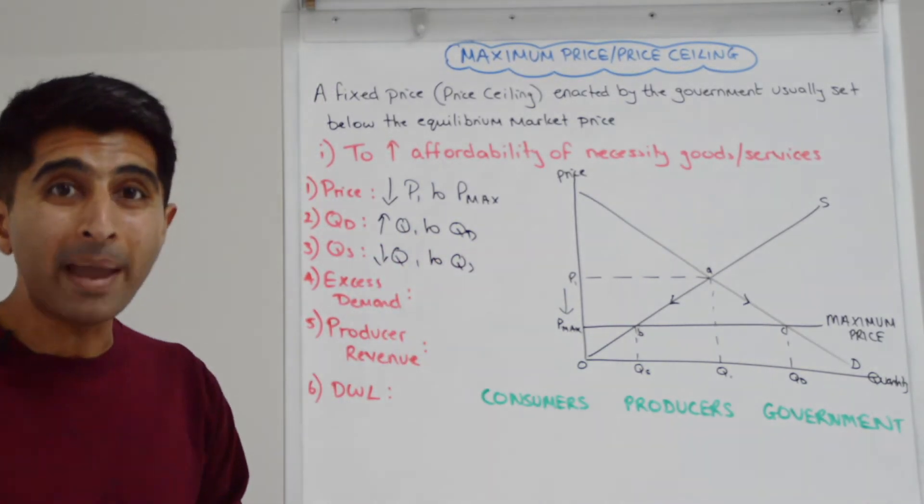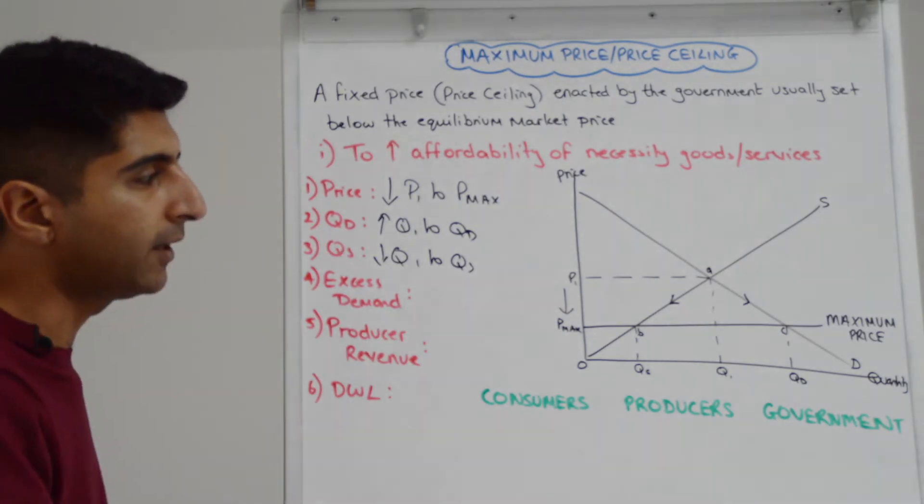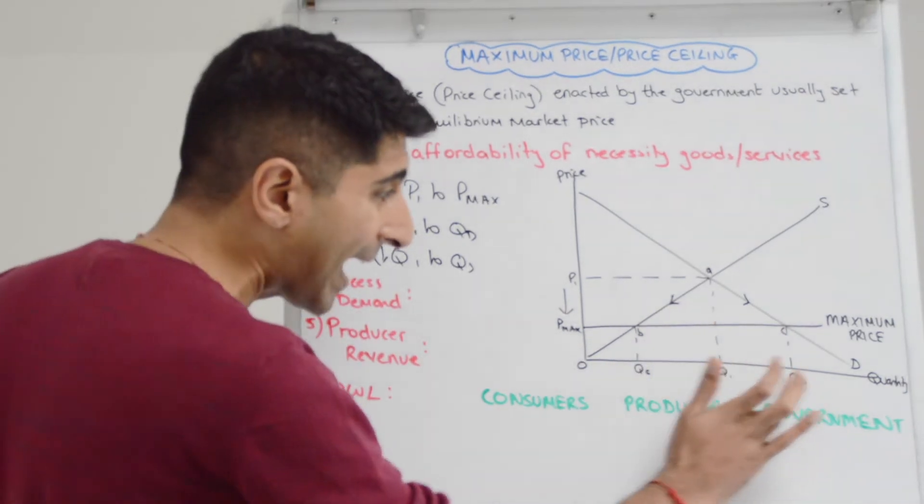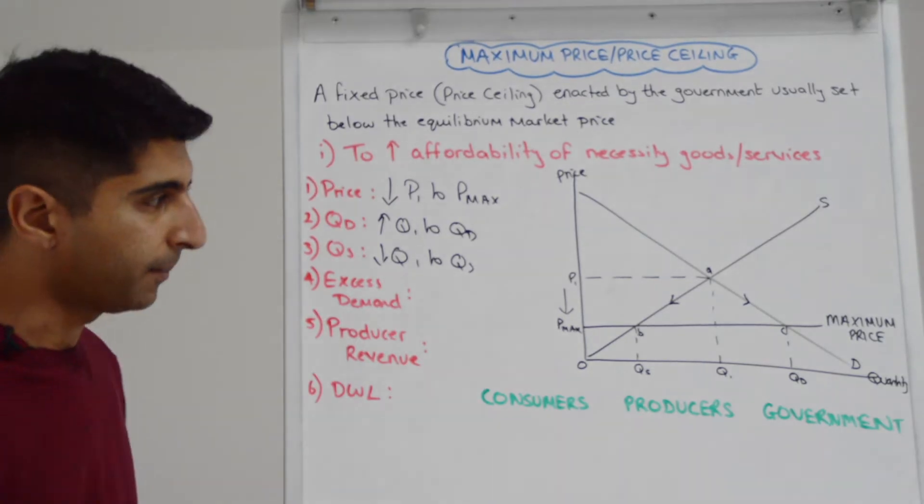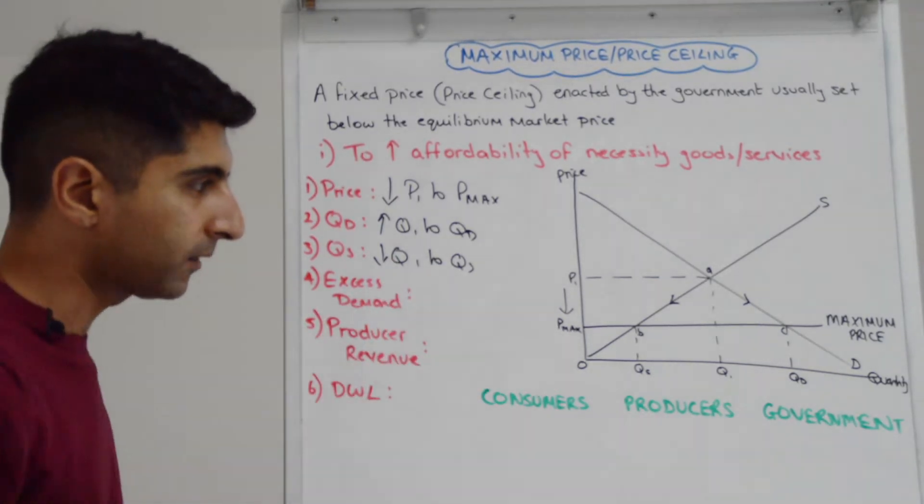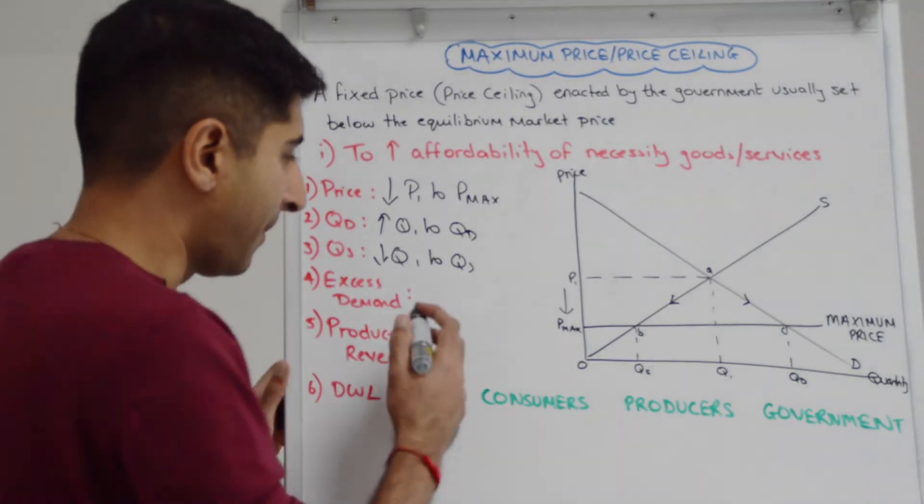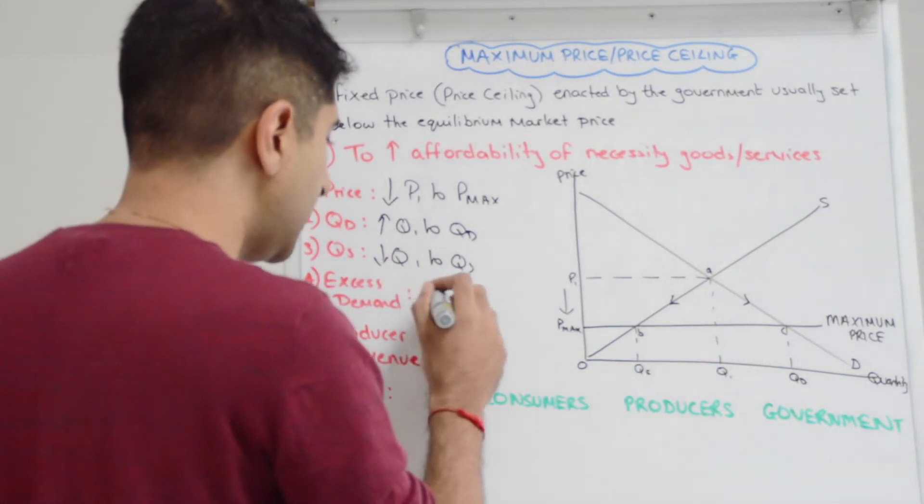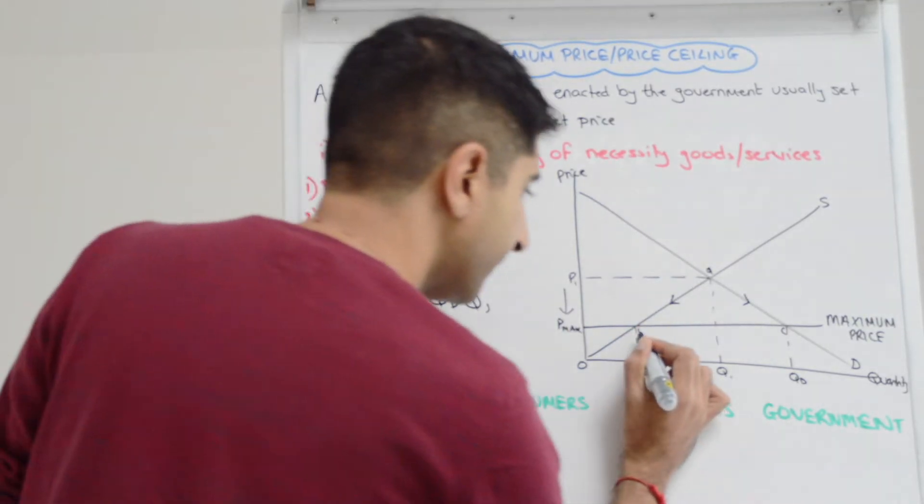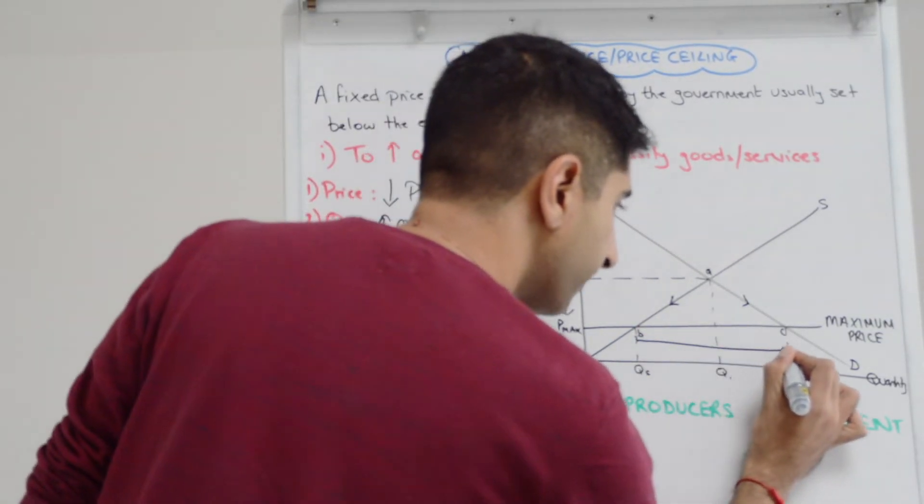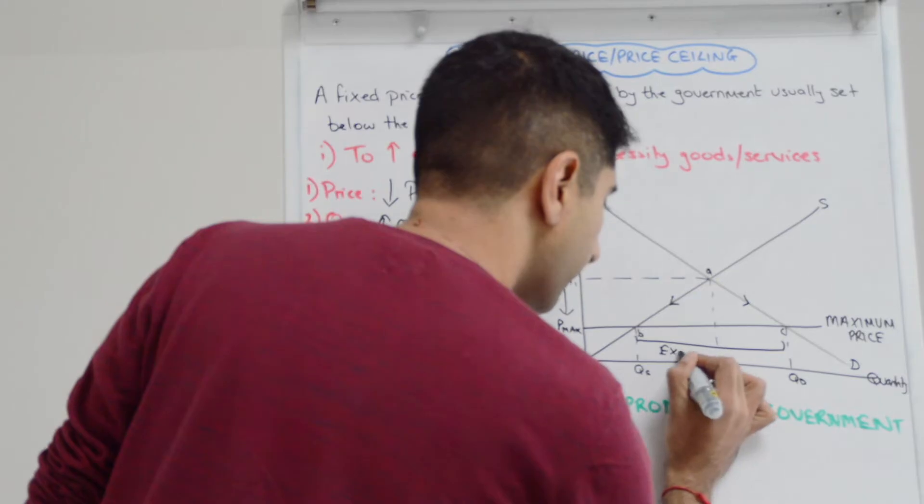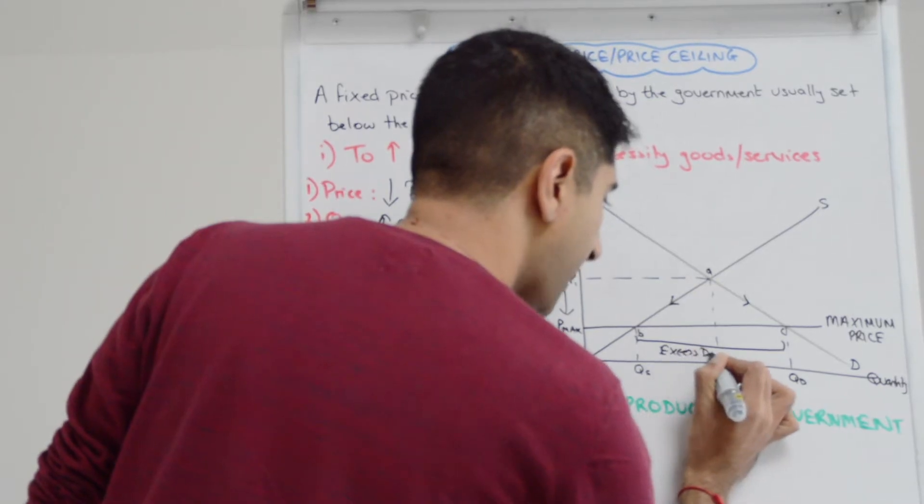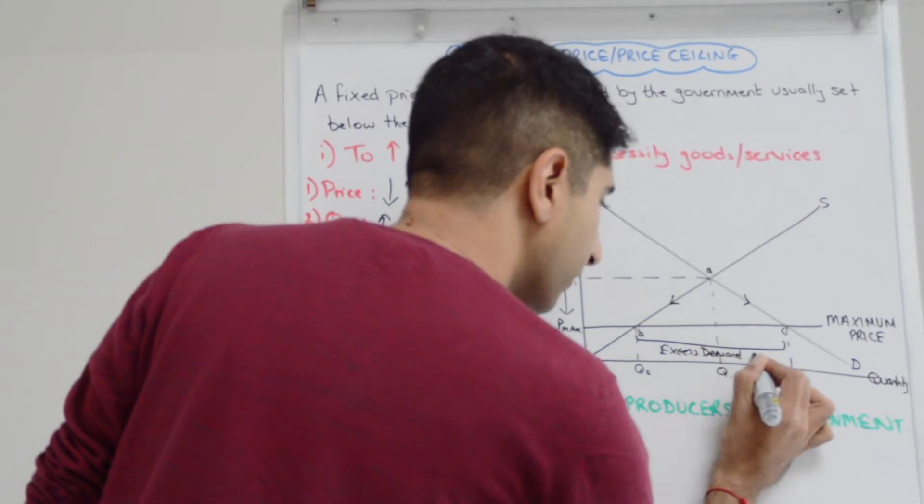And there is a major concern, a major market distortion. We can see that demand is much greater than supply as a result of this maximum price. That is an excess demand of the distance or the quantity difference between QD and QS. And we can label it as such on our diagram, like here. So that is the quantity difference, is the excess demand, also known as a shortage.